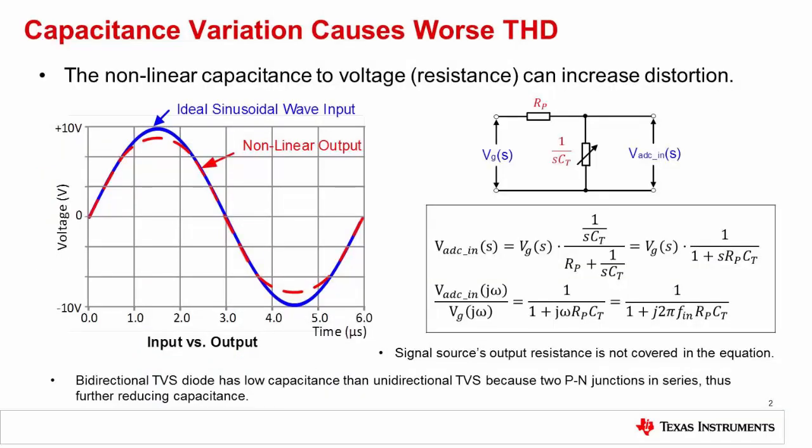Recall from the last presentation that the capacitance of the TVS diode changes versus applied reverse voltage. For the circuit shown on the right, the capacitance changes as the voltage swings from 0 volts to 10 volts. The input resistor and TVS capacitance form a low-pass filter, and the cutoff frequency of this filter changes depending on the instantaneous voltage of the input signal. For example, when the input signal is 5 volts, the filter will have a different cutoff frequency than when it has 10 volts on the input. Thus, the attenuation is dependent on the instantaneous voltage of the waveform, which has the effect of distorting the shape of the output waveform and introduces more THD into the measurement.